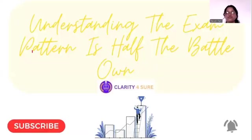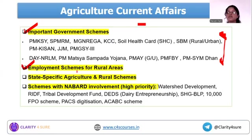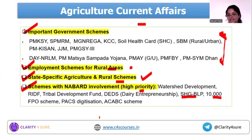Next is the schemes section. There are different important schemes under agriculture and rural ministry — cover the areas already seen in the chart. Employment schemes for rural areas are also important — the age group for which employment or skill courses are provided, financial assistance, and incentives. Different states also release state-specific agriculture and rural schemes that become important. Schemes with NABARD involvement are high priority: bank linkage program, 10,000 FPOs, PACS digitalization, SEABC schemes, WaterShare, and RIDO — all areas where NABARD is personally involved.